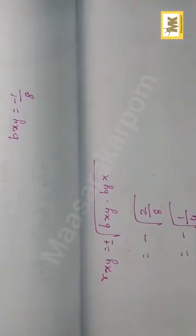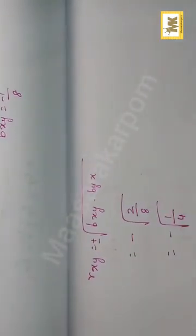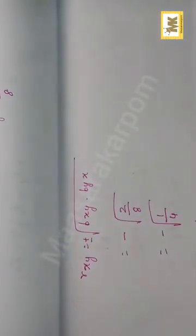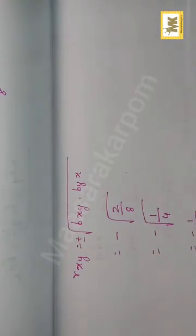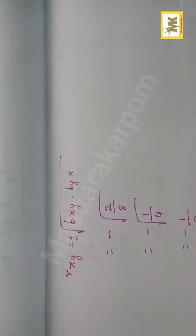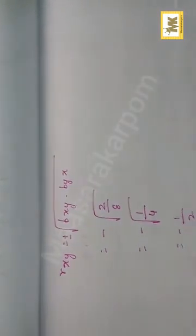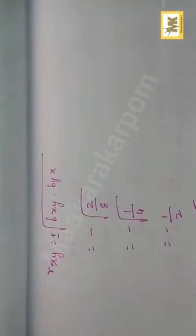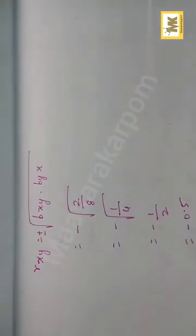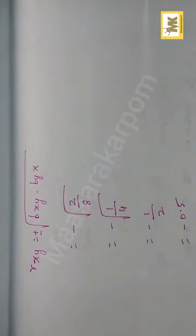r squared equals byx times bxy equals minus 2 times minus 1 by 8, giving 2 by 8 which is 1 by 4. The square root is 1 by 2, and retaining the negative sign since both regression coefficients are negative, the answer is minus 0.5.